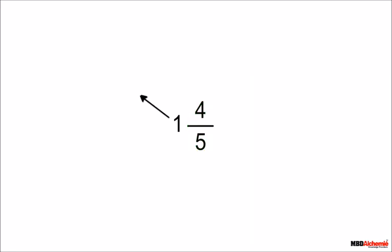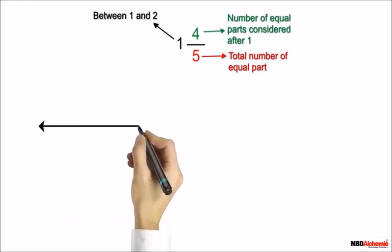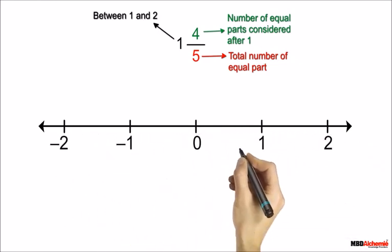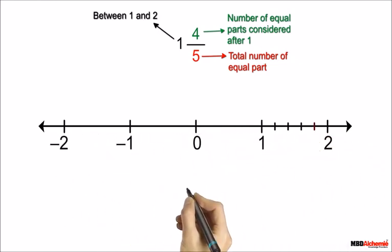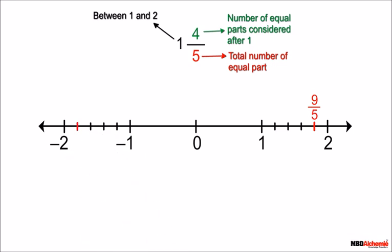Here 1 tells us that 9 upon 5 lies between 1 and the next whole number, that is 2. In the fractional part, 5 tells us the total number of equal parts, so we divide the length between 1 and 2 into 5 equal parts. The fourth mark on the right of 1 represents 9 upon 5. Similarly, minus 9 upon 5 will be represented on the left side of 0.